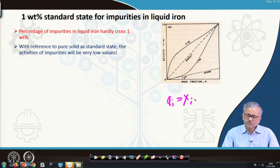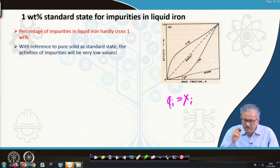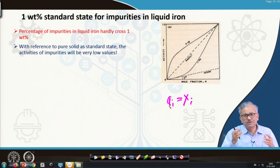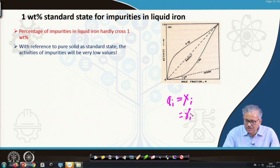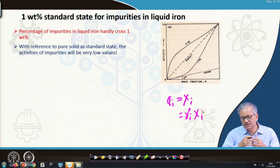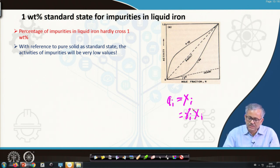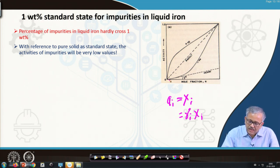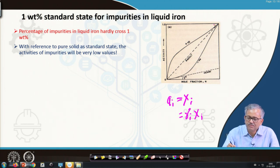When x_i equals 1, activity equals 1 — that is the pure solid at the standard state. In a non-ideal system, activity is not always equal to x_i; instead, activity equals γ_i times x_i, because there is interaction between solute and solvent. That is why an activity coefficient comes into the picture, giving an activity-composition relationship like this.